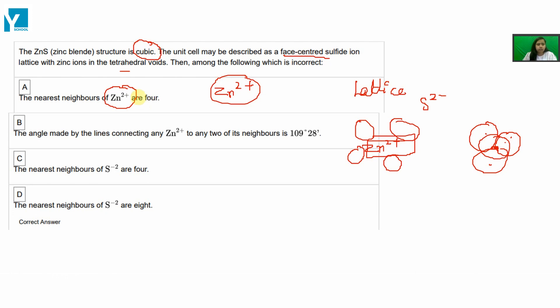The angle made by the lines connecting any Zn²⁺ to any two of its neighbors is 109 degrees 28 minutes.